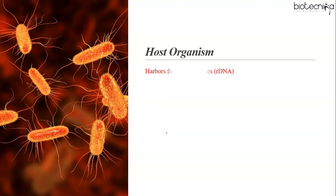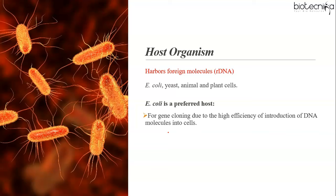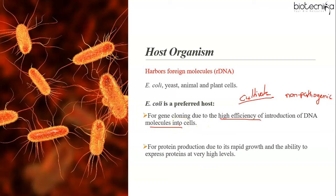The host organism harbors the recombinant DNA. Commonly used hosts include E. coli, yeast, animal cells, and plant cells. E. coli is the most preferred host organism because it is easy to grow in the laboratory using non-pathogenic strains. It is preferred for gene cloning due to high efficiency of DNA introduction and for protein production due to its rapid growth and ability to express proteins at very high levels.